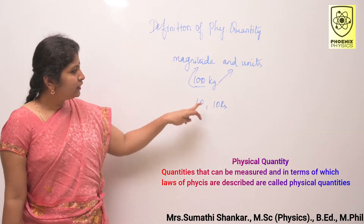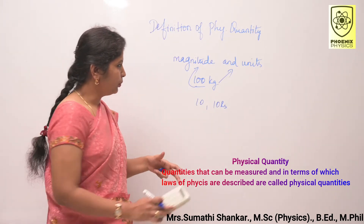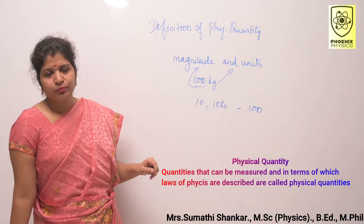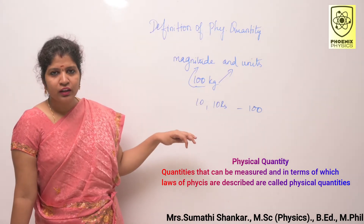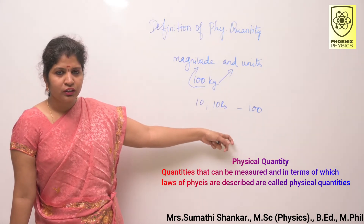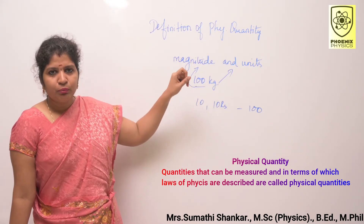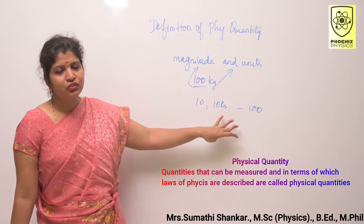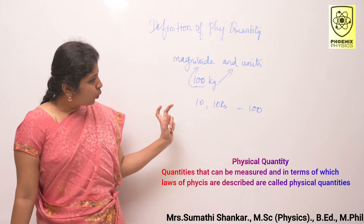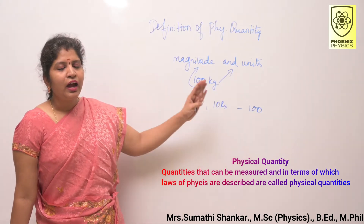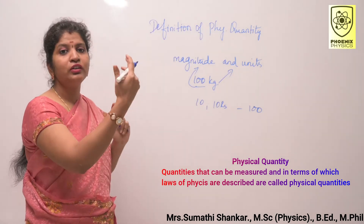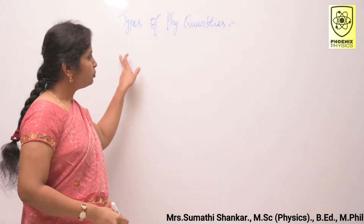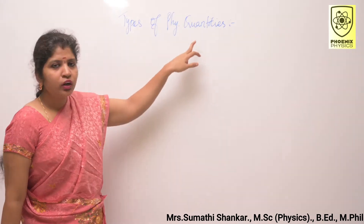Now I will ask one question. Suppose I give you 10-rupee notes and you count them as 100. Is currency a physical quantity? No. Why? Because you measured the rupee notes — the first part of the definition is satisfied — but it does not describe any law of physics. So currency is not a physical quantity. Quantities that can be measured and in terms of which laws of physics are described are known as physical quantities.